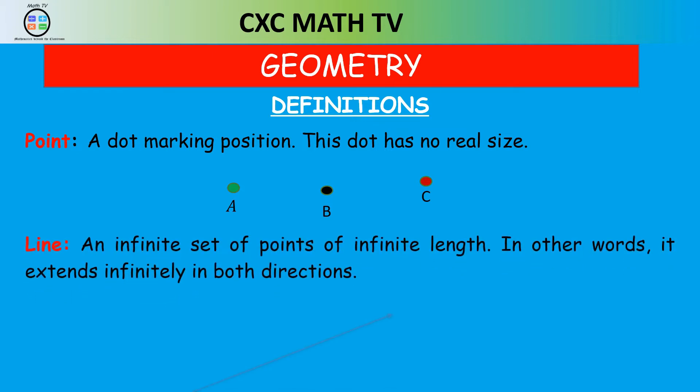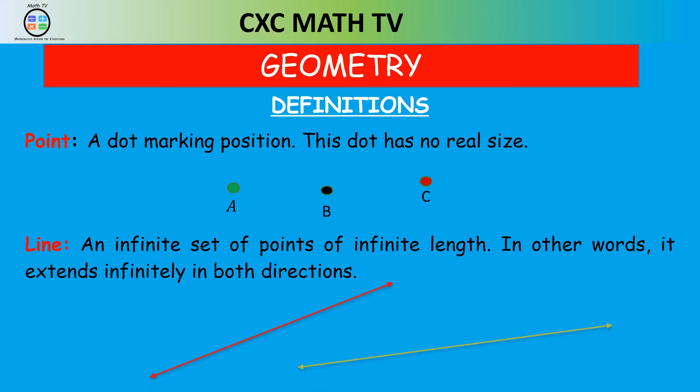A line is an infinite set of points of infinite length, meaning it continues forever. It goes in both directions. A line will always have arrows at the ends indicating that it's extending in both directions infinitely.